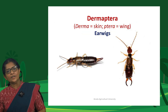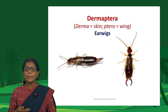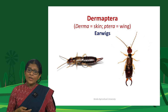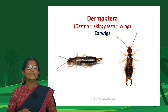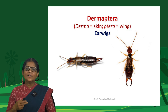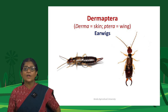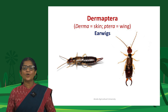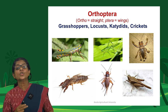Dermaptera — 'derma' (skin) and 'ptera' (wings) — are earwigs. They are called earwigs based on the false belief that they enter human ears while sleeping. Their forewings are short, thick, and skin-like, hence the name Dermaptera.